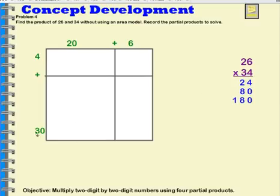Now I need to do 30 times 20. So 30 times 20, I can think of that as being 3 tens times 2 tens. 3 times 2 is 6, 10 times 10 is 100. So the product of 20 times 30 is 600.